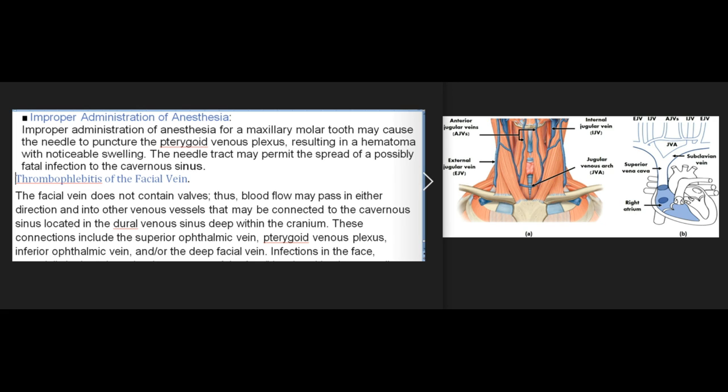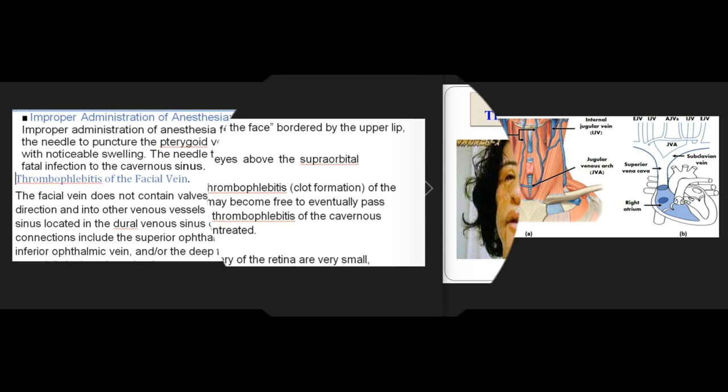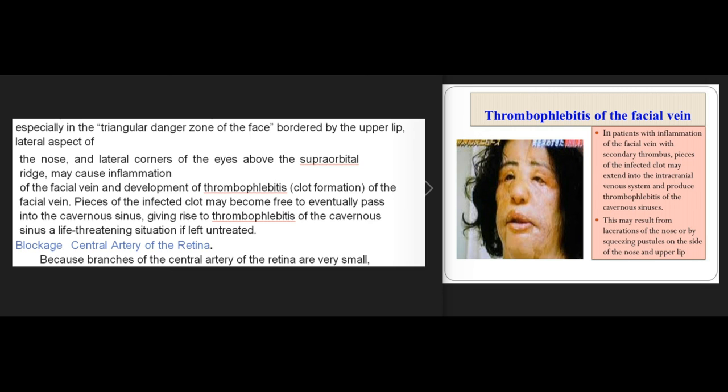Improper administration of anesthesia for a maxillary molar tooth may cause the needle to puncture the pterygoid venous plexus, resulting in a hematoma with noticeable swelling. The needle tract may also permit the spread of a possibly fatal infection to the cavernous sinus. Thrombophlebitis of the facial vein is a serious concern because the facial vein does not contain valves, allowing blood flow in either direction. Connections to the cavernous sinus include the superior ophthalmic vein, pterygoid venous plexus, inferior ophthalmic vein, and the deep facial vein. Infections in the triangular danger zone of the face — bordered by the upper lip, lateral aspect of the nose, and lateral corners of the eyes — may cause inflammation and thrombophlebitis of the facial vein, with pieces of infected clot potentially passing into the cavernous sinus, a life-threatening situation if left untreated.